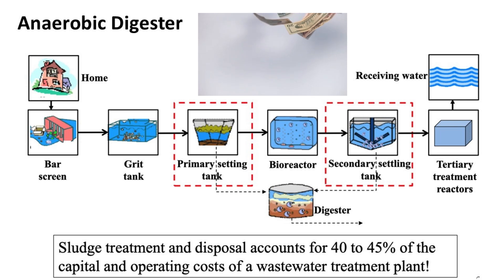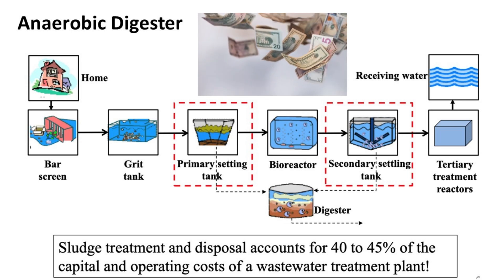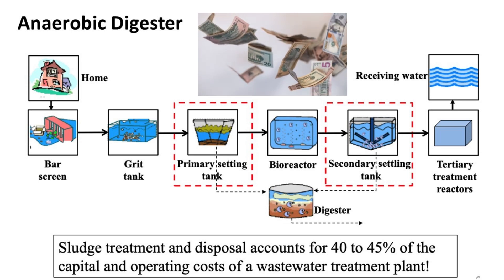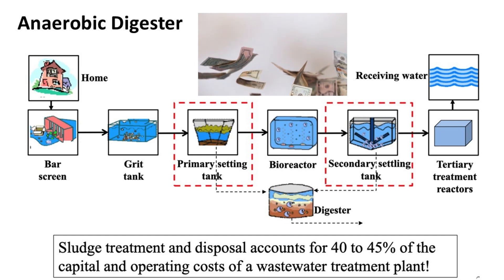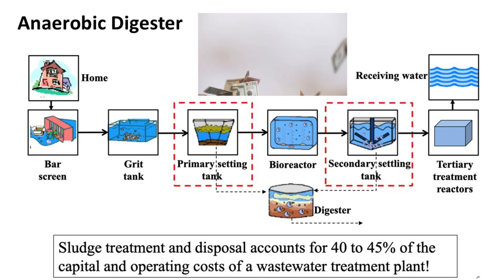On average, sludge can constitute 1-2% of the treated wastewater volume but accounts for up to 50% of the operational expenses in treatment plants.